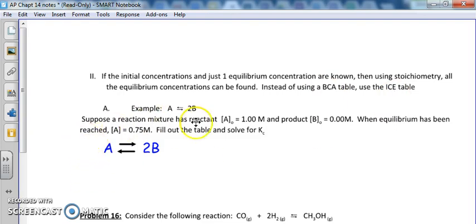So let's see how this works. Suppose you have a reaction mixture of A at one molar and B at zero. When equilibrium has been reached, A is 0.75. I don't know what B is. It says fill the table and solve for Kc. Well, the first thing I can do, because it's an equilibrium, how do I know it's equilibrium? I see a double arrow. If you see a double arrow, it's equilibrium. I start out at one because they told me that and I start out with no B because they told me that and then we end up at 0.75.